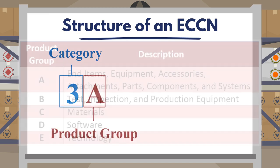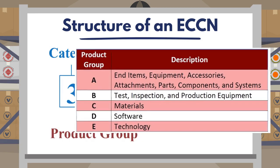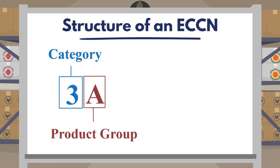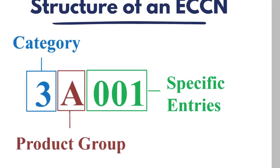The second character is a letter A through E that indicates the type of item or product group. Consider the third, fourth, and fifth characters as a sequential listing of different items within the category and product group.